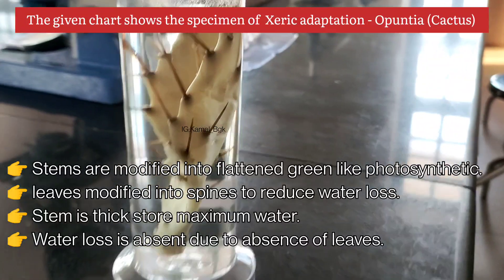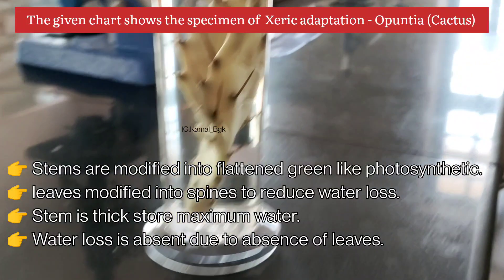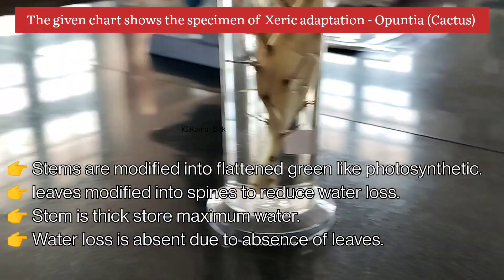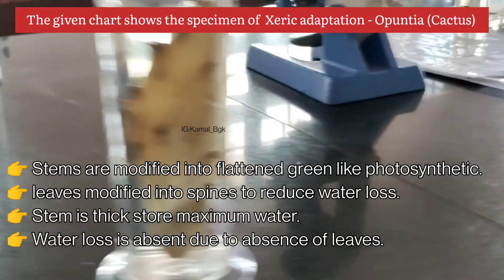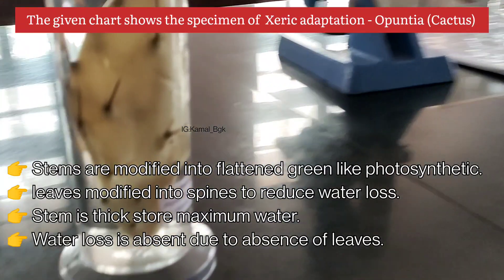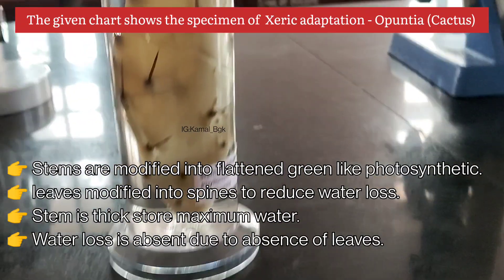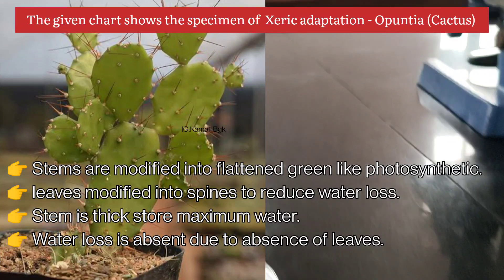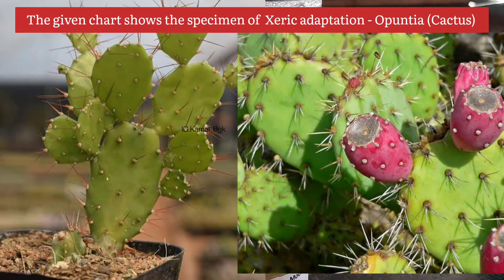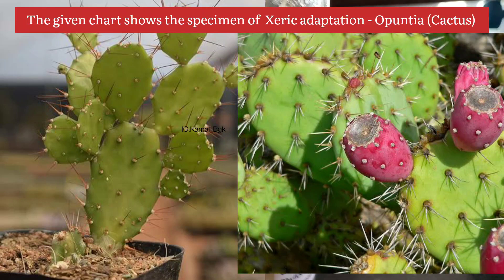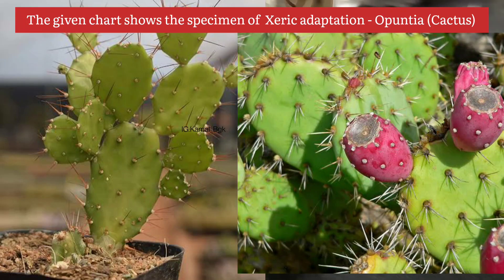Water loss is completely absent due to absence of leaves. In this plant, the complete plant body is not a leaf — that is the stem part. The stem is thick and fleshy in characteristics, giving strength to the plant. It can survive without water even in higher temperature conditions, i.e., in the desert area.